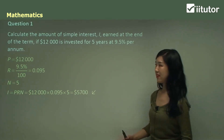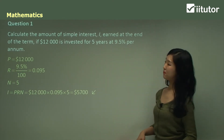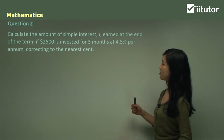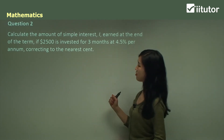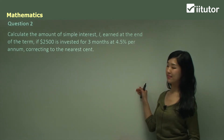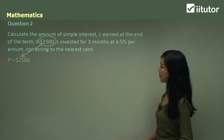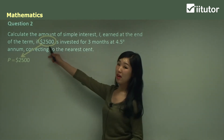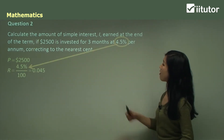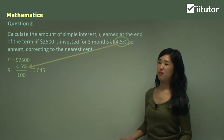Very simple because it's simple interest. Question two: calculate the amount of simple interest earned at the end of the term if $2,500 is invested for three months at 4.5% per annum, correcting to the nearest cent. P is our principal value $2,500. R the rate is 4.5%, or as a decimal 0.045.